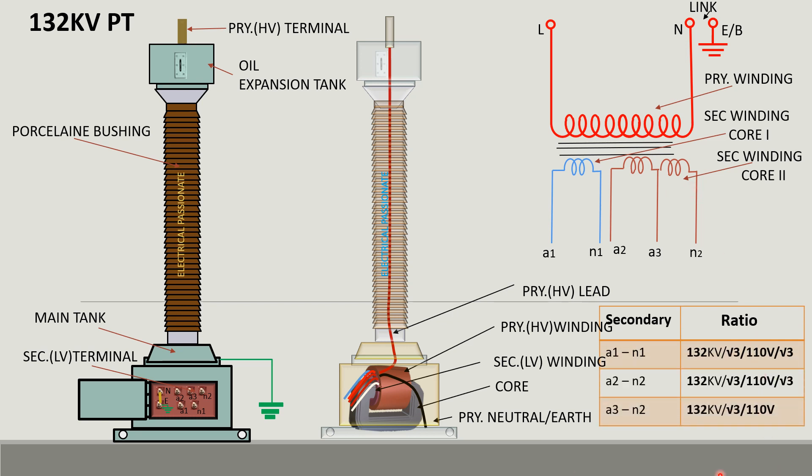The PT potential transformer has two cores here: A1 and N1, A2, A3, N2 with respective operating voltage.